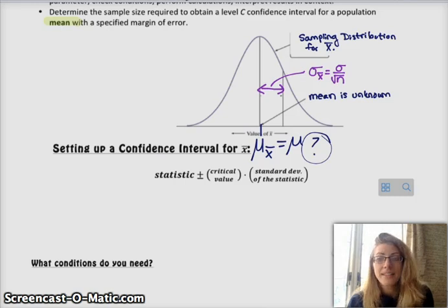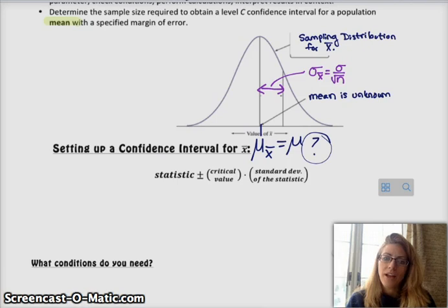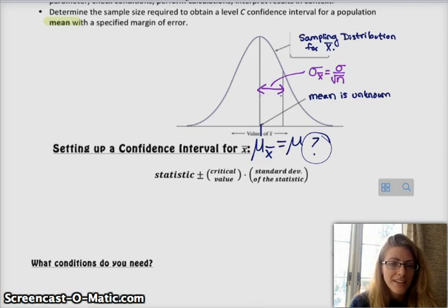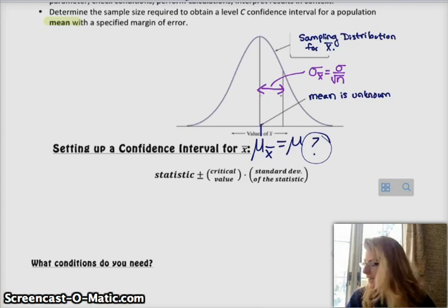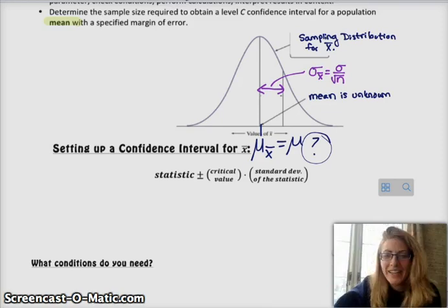It is sigma over square root of n. Remembering that sigma is the true standard deviation of the population. Hence why we're going to make the assumption that we already know it. If we don't know it, then we have to do other things. We're assuming that we know sigma. I know it's silly. Move on.